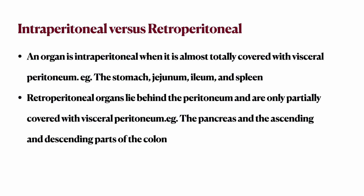An intraperitoneal organ is almost totally covered with visceral peritoneum. Examples include the stomach, the jejunum, the ileum, and the spleen. These organs move with respiration.